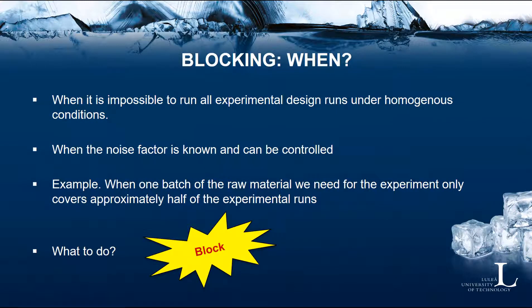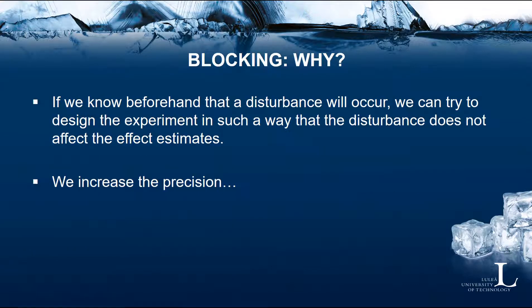When should we do blocking? When it's impossible to run all experimental design runs under homogeneous conditions, and when we know the noise factor and it can be controlled. For example, if we have one batch of raw material that only covers half of the experimental runs, then we know we need to change the raw material in the middle of the experiment — a situation where we want to run the experiment in two blocks. If we know beforehand that a disturbance will occur, we can design the experiment so that the disturbance will not affect the effect estimates, increasing the precision in the effect estimates.